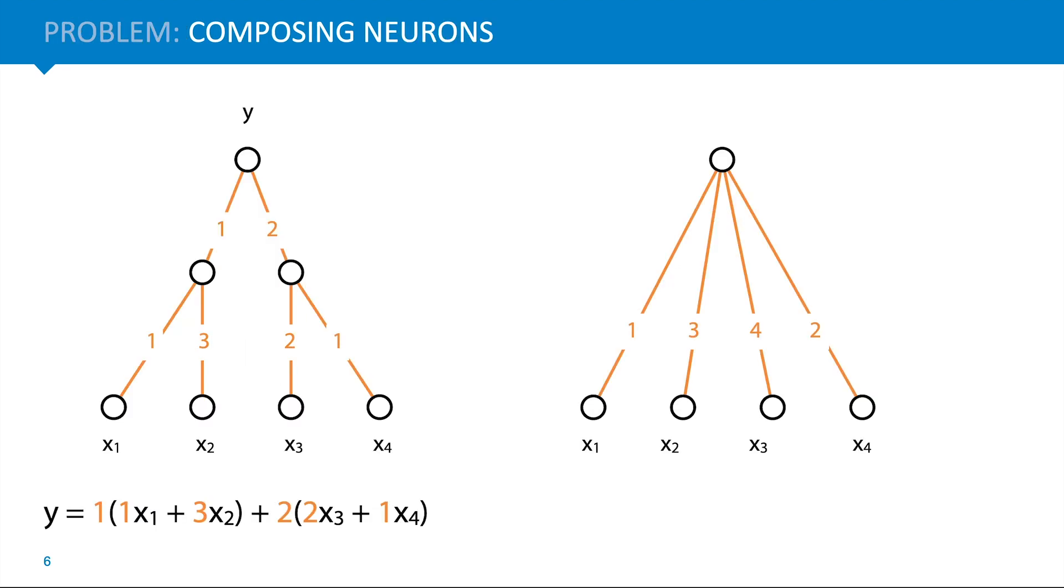Here's an example of that. On the left we see three neurons chained together into a network. Below that we see written out in full the function that they describe. The problem is, you can take this formula at the bottom left and multiply out the brackets, which gives you this function. And that function is also a perceptron. So basically for any chain of perceptrons you set up, so long as they're all linear, they all collapse back into one single perceptron.